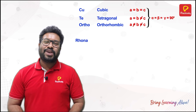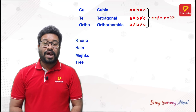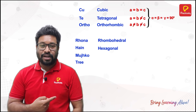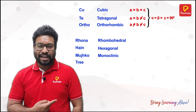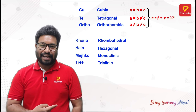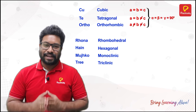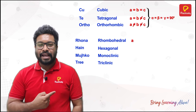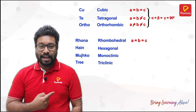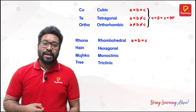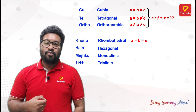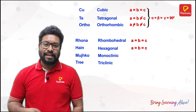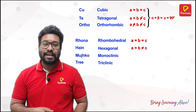Similarly, 'rona hai muchko tripper': Rona — rhombohedral. Hai — hexagonal. Muchko — monoclinic. Tri — triclinic. For their sides: rhombohedral has A equal to B equal to C. For hexagonal, put one line across B equal to C, so A equal to B, not equal to C. Going from hexagonal to monoclinic, slash one more line across A equal to B, so now A not equal to B, not equal to C.